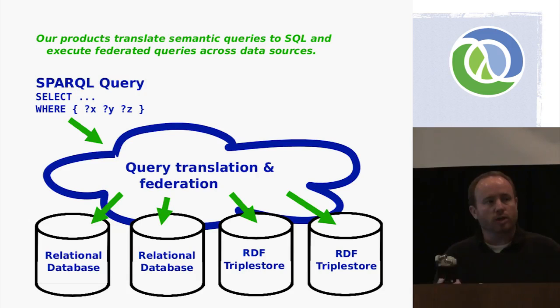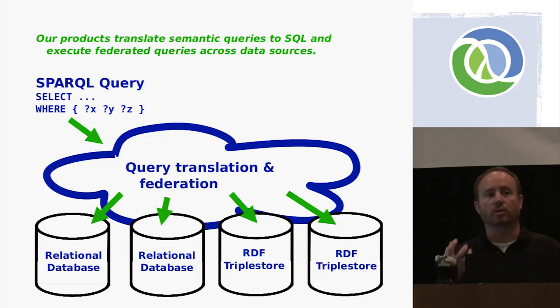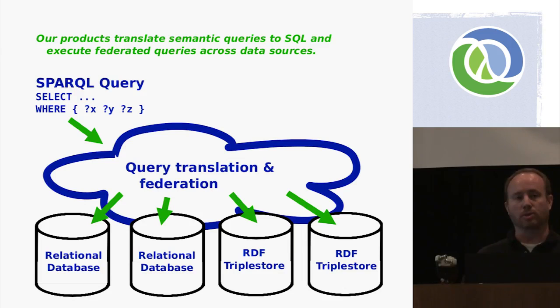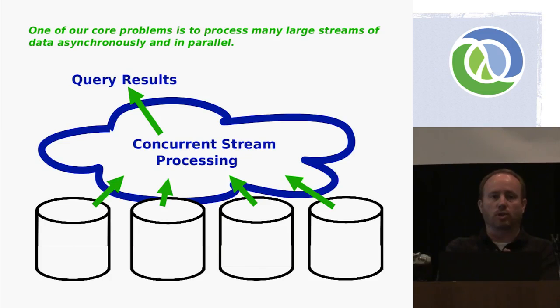The product really does two main functions. The first is query translation, and the second is database federation. On the query translation side, we'll take in a semantic query — a SPARQL query — and translate that into a set of equivalent SQL queries on a data source. On the database federation side, we'll take in a single logical query and break that up into a set of physical database queries that need to be run on many database sources. In both cases the pattern is: a single query comes in at the top, many queries are run against underlying databases, those produce result sets which we process as parallel data streams, and then we do additional query processing to present that as a single logical result set to the end user.